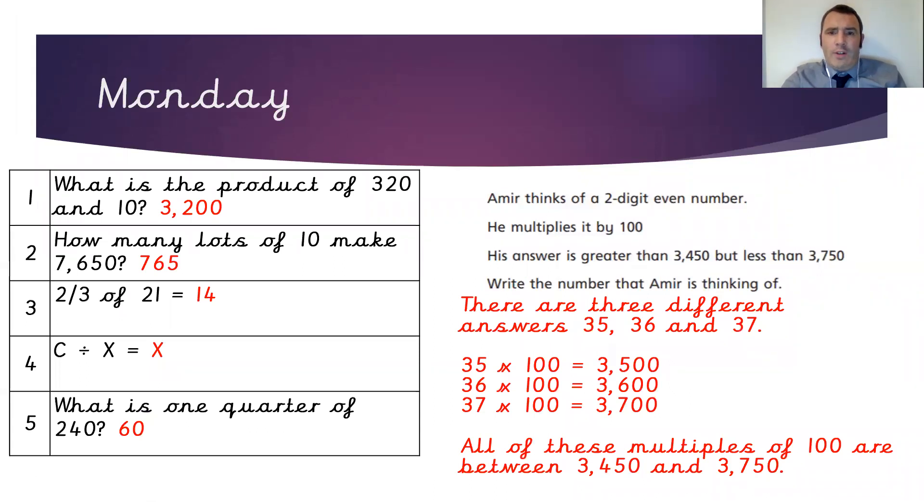Amir has thought of a two-digit number, and there are three different answers to this question: 35, 36, and 37. So the two-digit number must be greater than 3,450 but less than 3,750. The two-digit number has got to be 35 or bigger and 37 or fewer.